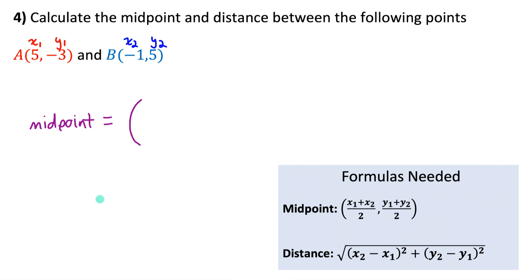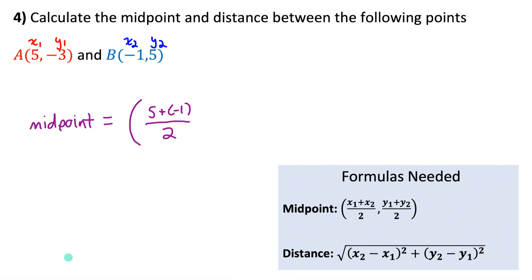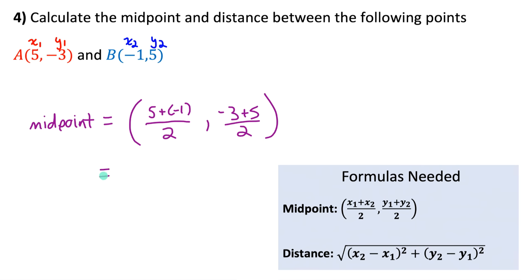Average the x-coordinates: (5 + (−1)) / 2 = 4/2 = 2. Average the y-coordinates: (−3 + 5) / 2 = 2/2 = 1. So the midpoint is (2, 1). Now let's find the distance between A and B. The distance formula comes from Pythagorean theorem: take the square root of the differences in x-coordinates squared plus the differences in y-coordinates squared.